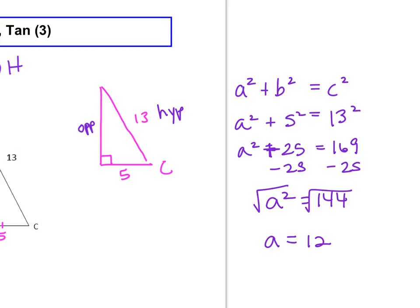I'm going to go back to the triangle and label the opposite side as 12. And now we can answer the question. The sine of angle C is opposite over hypotenuse. The opposite side we just figured out was 12, and the hypotenuse is 13.